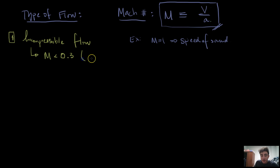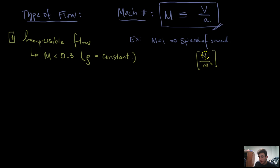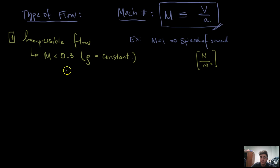Incompressible flow is when you have Mach number less than 0.3, so this is very slow. You can almost think of the flow over a car to be incompressible, because cars don't really go that fast. Or just like a plane when it's about to take off — incompressible flow. And it's going to be really important as our first stepping stone.